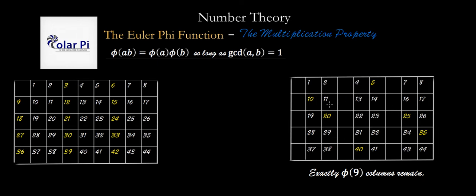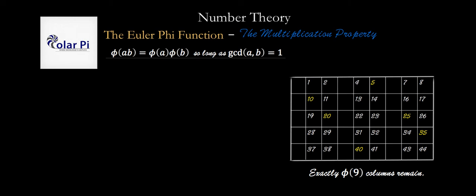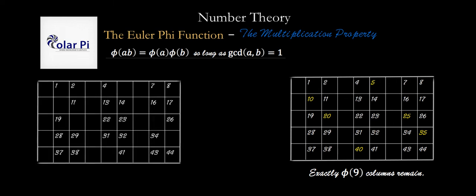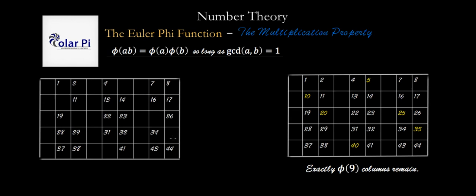Now, we go into these columns and highlight and therefore throw out those numbers that are not relatively prime to 5 this time. And when we do, when we throw out those numbers of these remaining that are not relatively prime to 5, this is what our chart will look like. Now, these phi of 9 columns that remained have exactly phi of 5 numbers in each of them. Phi(5), remember, is 4. So, there's 4 numbers in this column, 4 numbers in this column, 4 here, 4 here, 4 here, and 4 here.